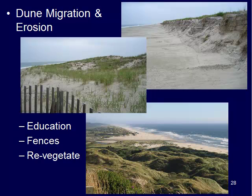Dune migration and erosion — anywhere where we have sand on a beach, we have dunes that usually build up a little bit further inland than the actual beach environment. In some places, dunes are actively moving from place to place, which you can see on the Oregon coast near Florence. In some locations, we have dunes that are fairly stable with dune grass growing on those piles of sand. That dune grass helps to stabilize the dunes so they don't necessarily migrate very much.